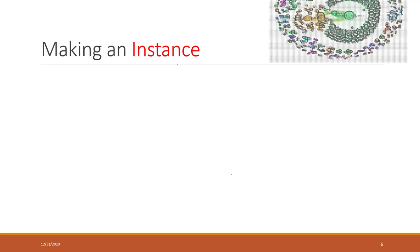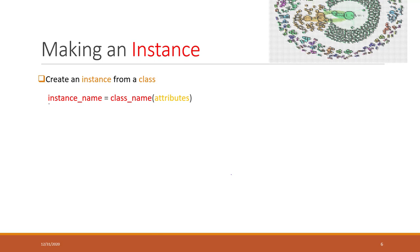Now we know how to define a class, so how can we make an instance? From those previous examples, you should already know how to make an instance. To create an instance from a class, you just write the name of the instance, equals the class name, and also provide those required attributes — for example, those required attributes in the initial method or in the other methods.